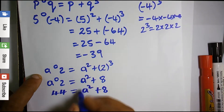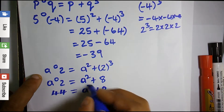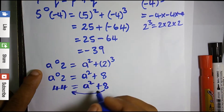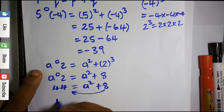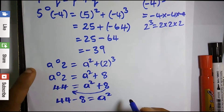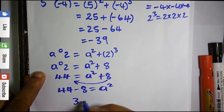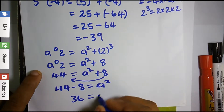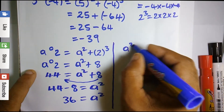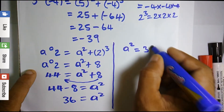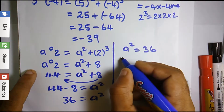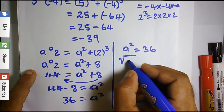We need to solve for 'a'. I'll collect like terms — bringing the 8 over the equals sign makes it negative. So we have 44 minus 8 = a², which gives us 36 = a². To get rid of the square on 'a', we take the square root of both sides.